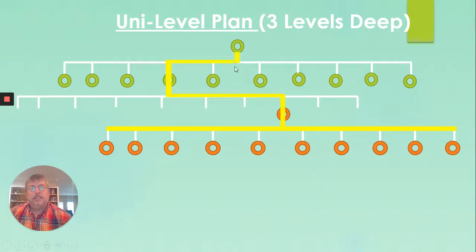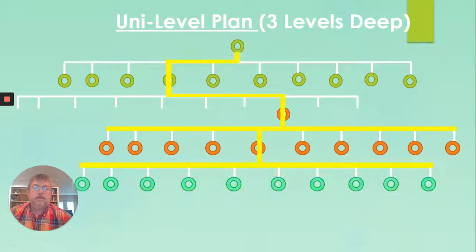Now, this is your direct line of sponsorship. This was you. You enrolled this person. They enrolled this person. And this person enrolled all these people. So in a unilevel plan, you're going to get paid up to three levels. And now let's just say that on the third level, a rock star shows up and this person puts in a whole bunch of high quality people and they start building. All right. You're still only getting paid on three levels.